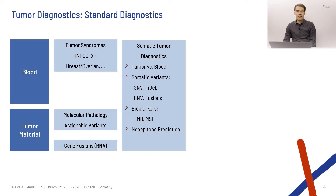Let's look at one of those products that we work on. In tumor diagnostics, if you have a patient's blood, you can look for tumor syndromes that are inherited. And if you have tumor material, you can look at actionable variants from DNA and RNA levels. If you have both materials, you can do a full somatic analysis determining not only tumor variants, but also biomarkers such as mutational burden, and even predict neoepitopes for novel vaccination approaches.